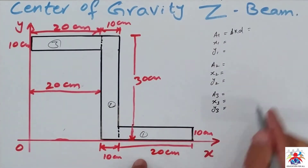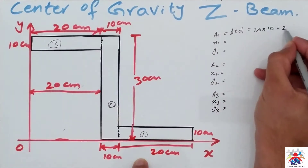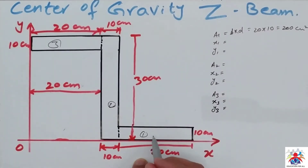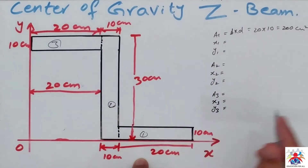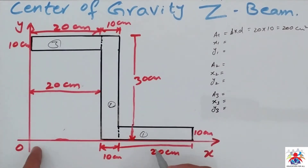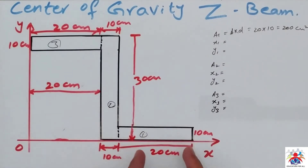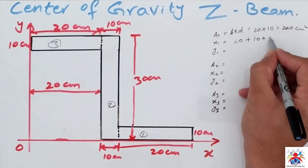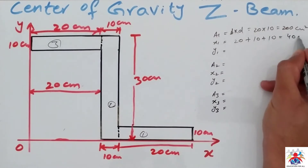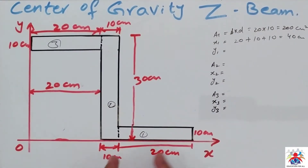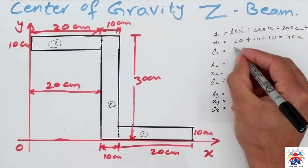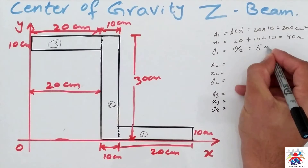For figure number one, the area is 20 multiplied by 10, which equals 200 square centimeters. X-bar is always the center point of the shape — from the x-axis to here is 20, then from here we have 30, so it will be 20 plus 10 plus 10, giving 40 centimeters. Y-bar is the vertical distance, which is 10 divided by 2, equal to 5 centimeters.